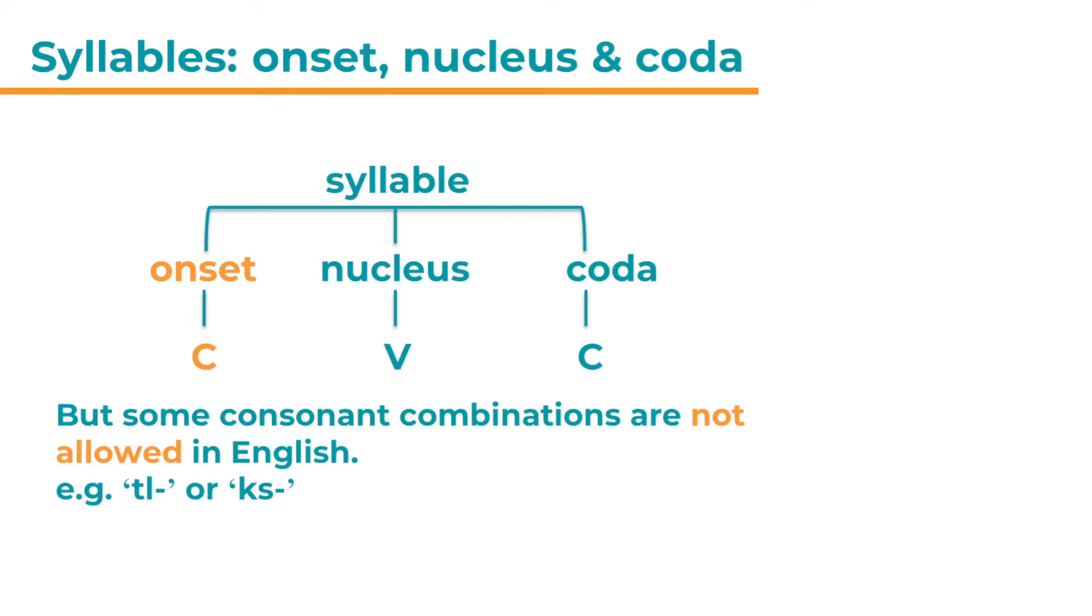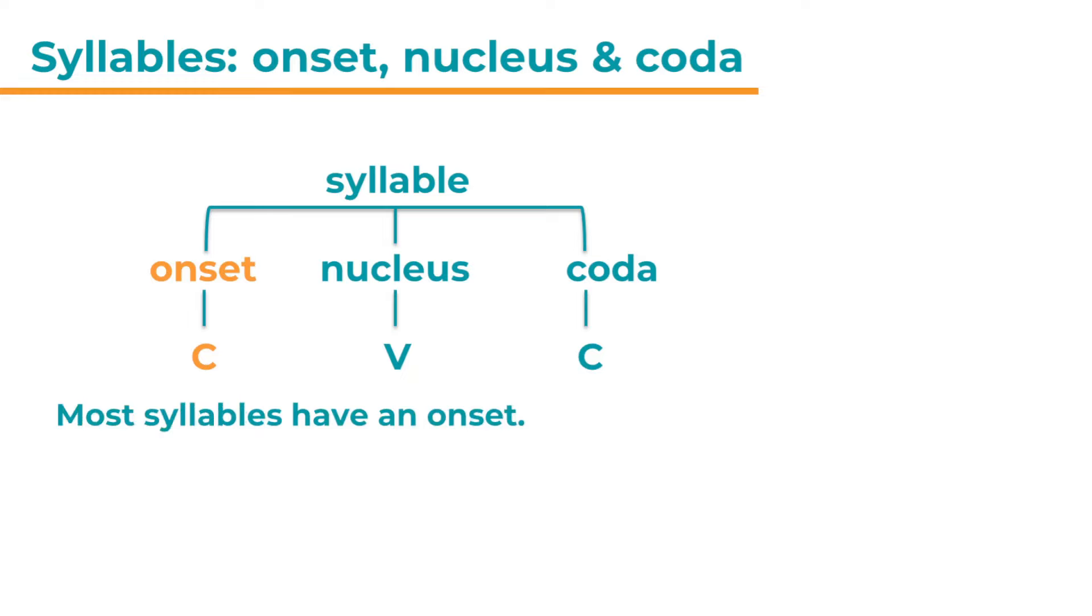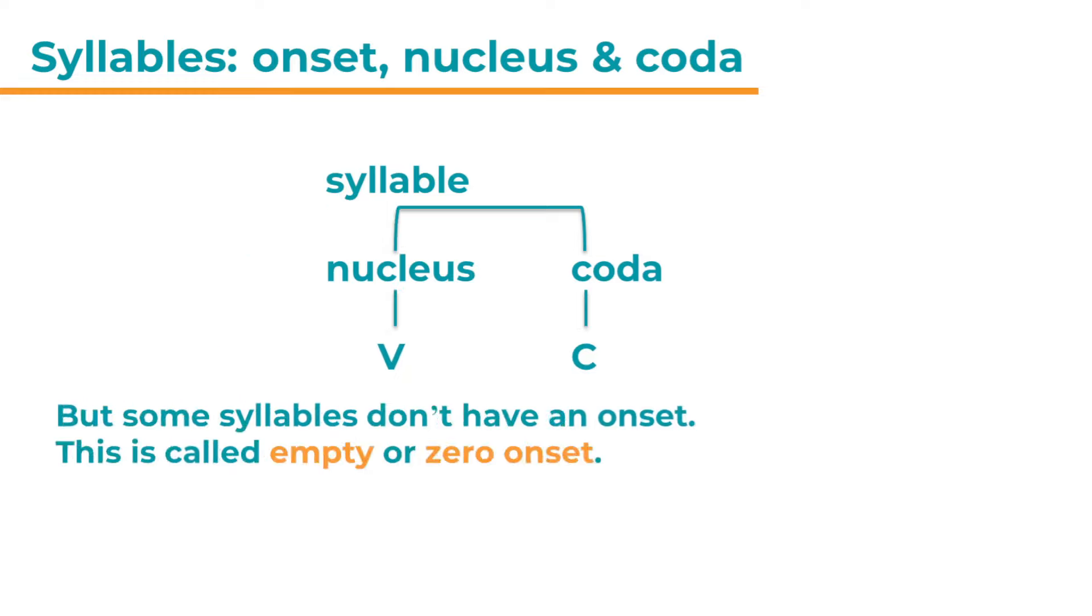But some consonant combinations are not allowed in English. So for example, tl or x are not allowed as onset consonant clusters. Most syllables have an onset. But some syllables don't have an onset. And this is called empty or zero onset.